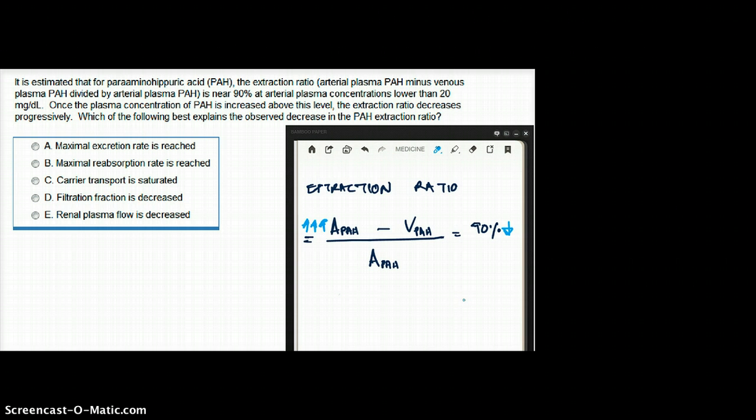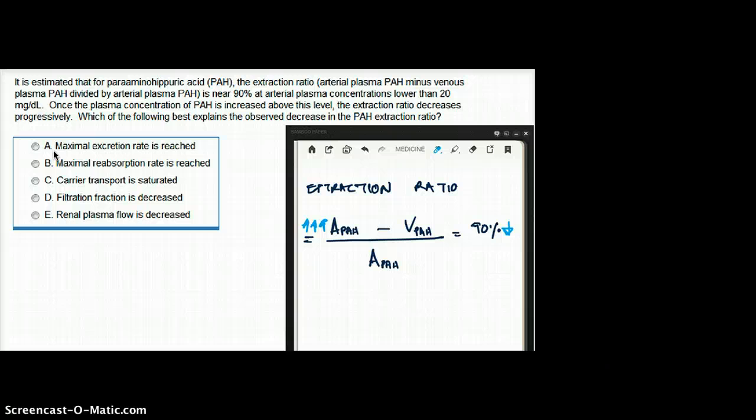So the secretion, the carriers must have been saturated with the amount of PAH that's coming in their system. So 20 mg per deciliter seems like their limit. If it goes above that, then there is overload of work and they cannot get rid of all the PAH that's in the system. So I would probably be looking for an answer which would say the carriers were saturated.